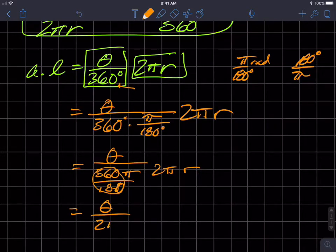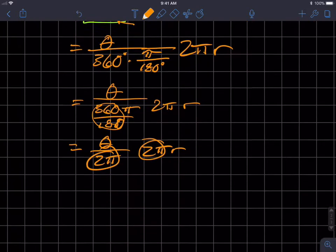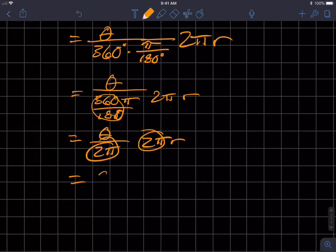So I get θ over 2π, 2πr, and these two π's equal one. So I get θ and that's now in radians times the radius of the circle.